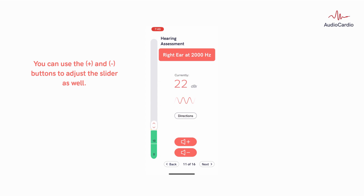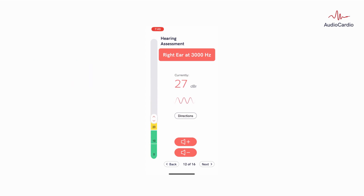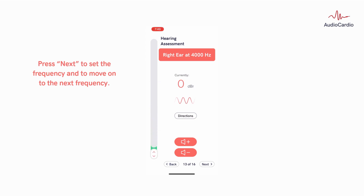You can use the plus and minus buttons to adjust the slider as well. Press Next to set the frequency and to move on to the next frequency.